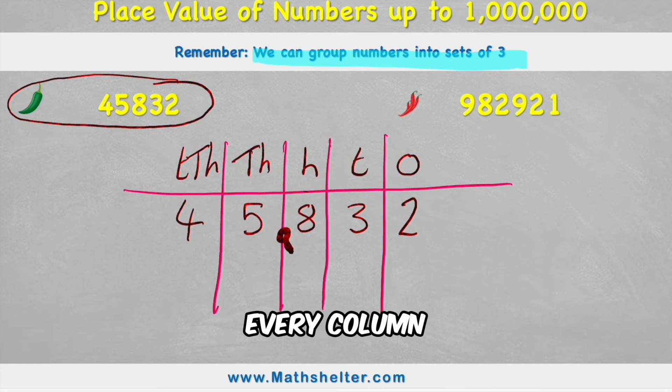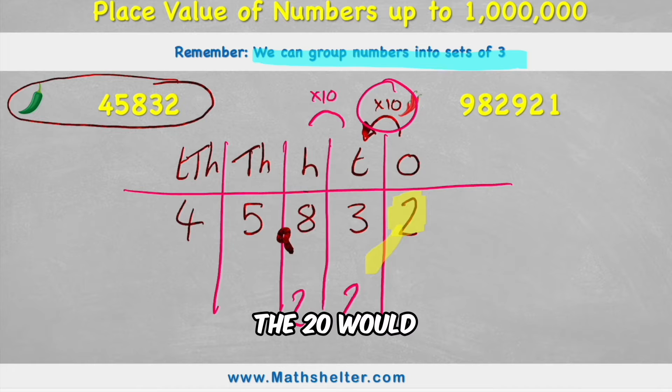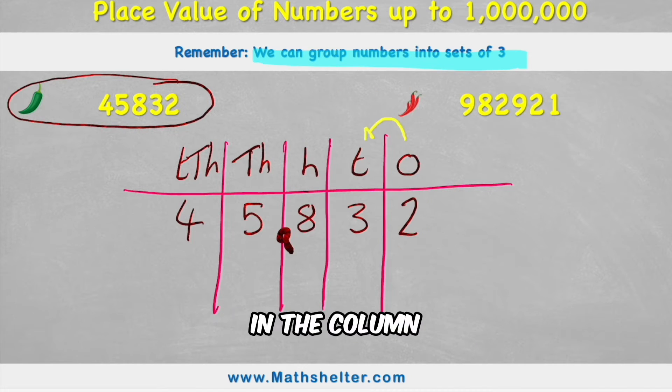But what else can we learn from this chart? Well, we need to know that every column is 10 times larger than the last. So if we had, for example, this 2 in the ones column, it obviously has a value of just 2. But if I moved it into the tens column, then this now has a value of 20, or in other words, 2 times 10. Then if I moved it into the hundreds column, it would be another times 10. So therefore, the 20 would become 200. So we need to know that everything in the column to the left is 10 times larger.